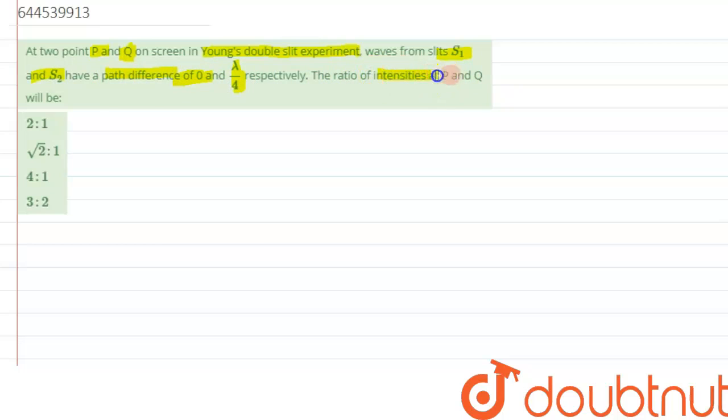The ratio of intensities at P and Q will be - so we need to calculate the ratio of intensities at both these points.